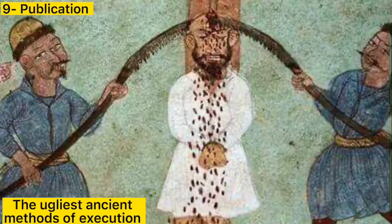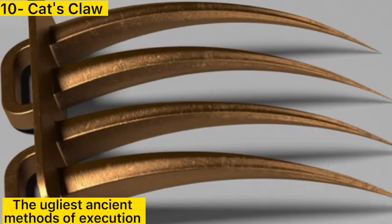Method 10: Cat's Claws. This method was used in Spain, where the executioner would wear a sharp iron instrument resembling a cat's claw to remove and tear the victim's skin until he died. This method involved a prolonged period of torture.